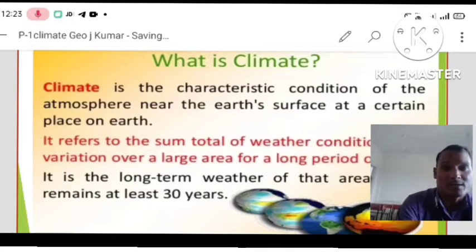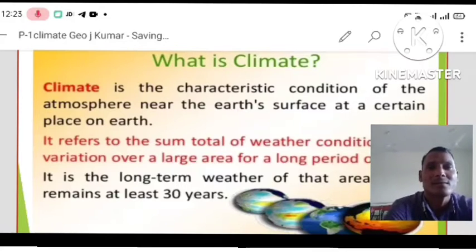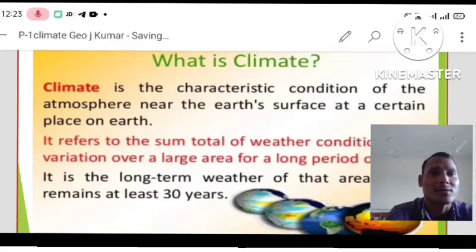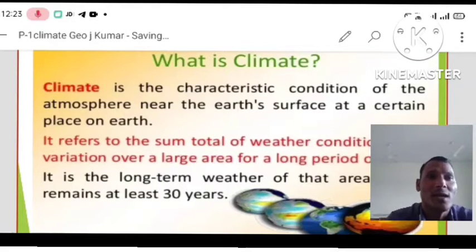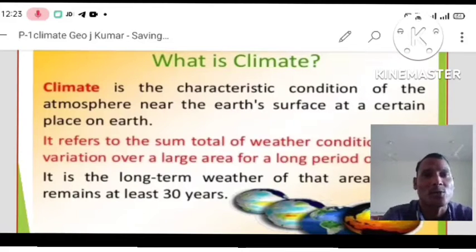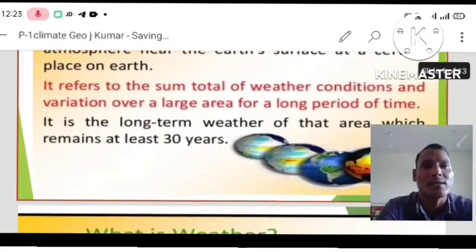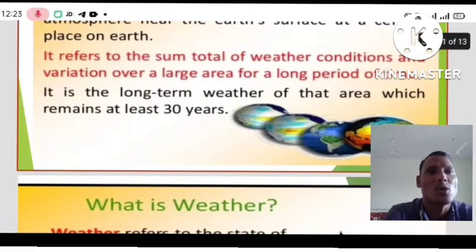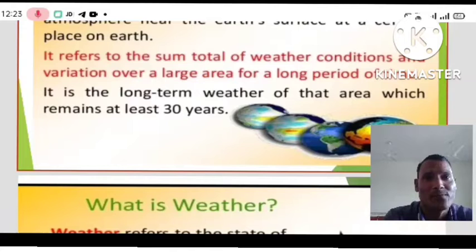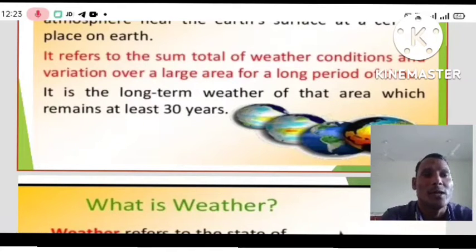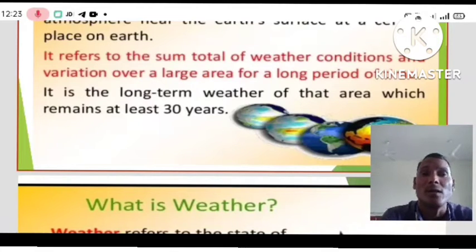What is climate? Climate is a characteristic condition of the atmosphere near the earth's surface at a certain place on the earth. It refers to the sum total of weather conditions and variations over a large area for a long period of time. It is the long-term weather of the area which remains for at least about 30 years.